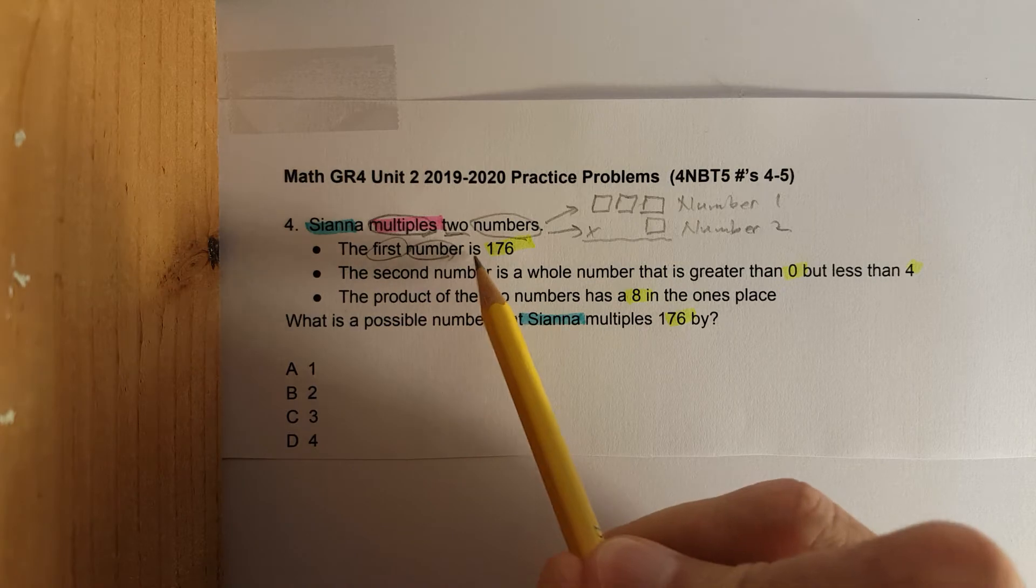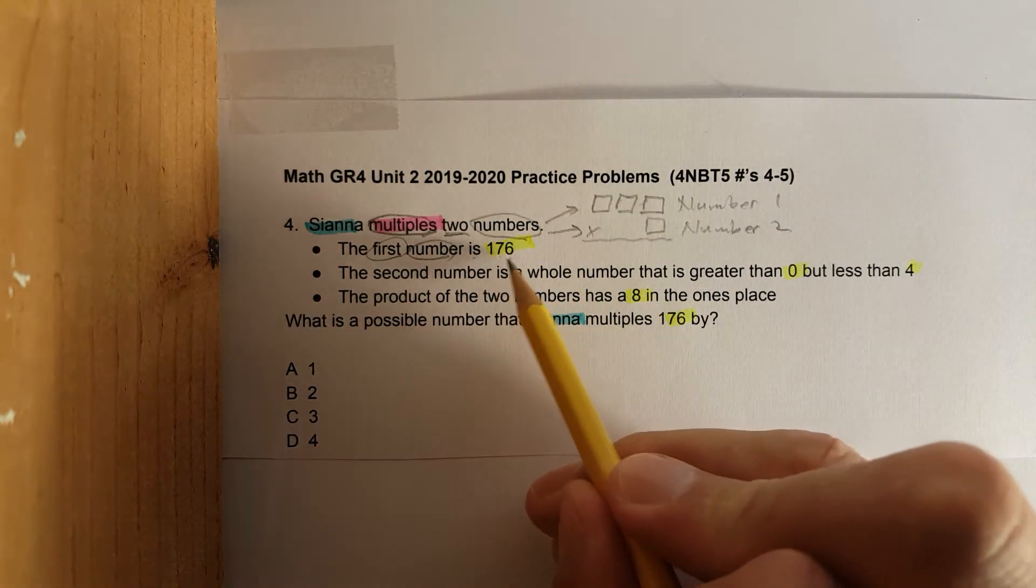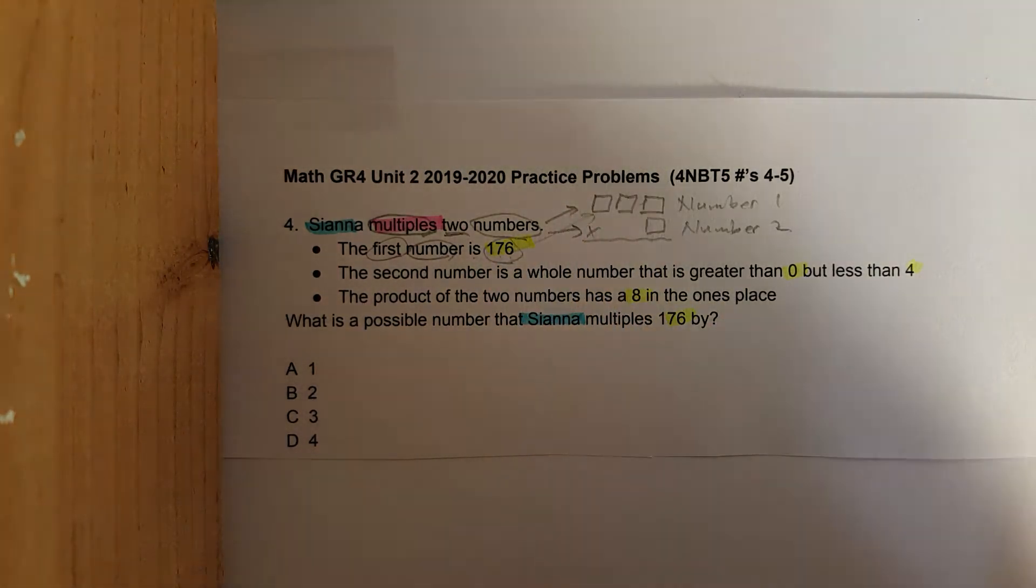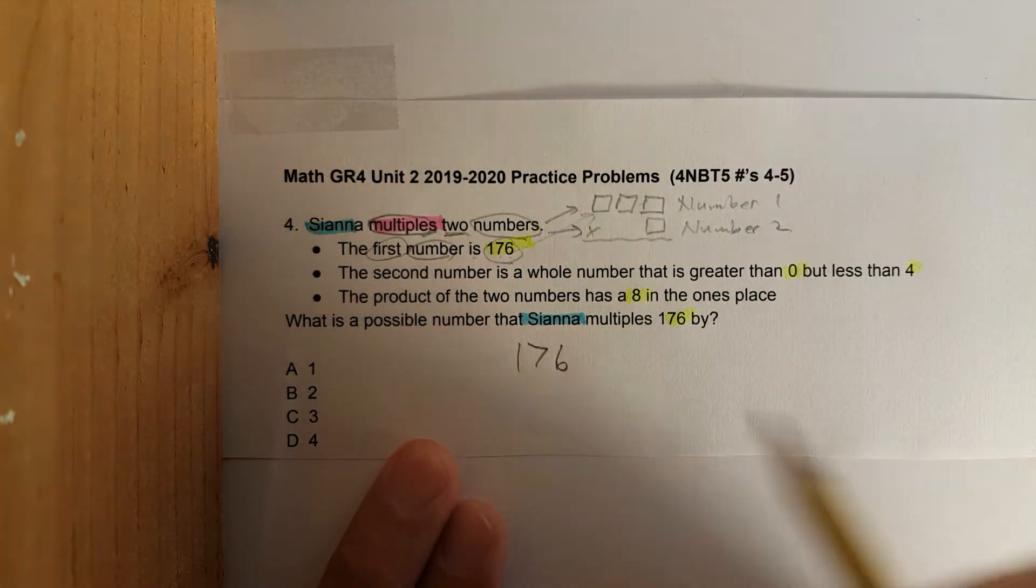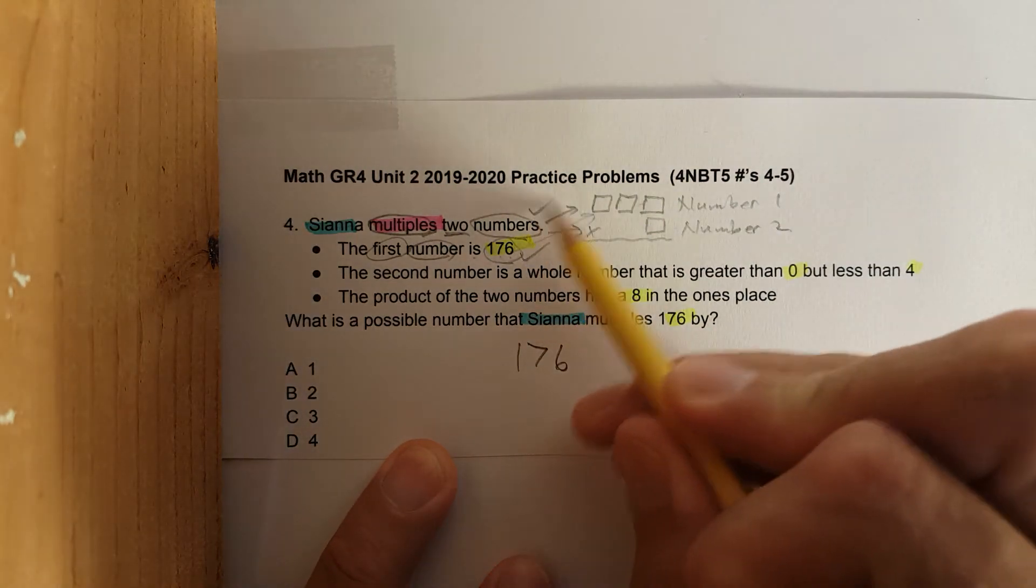The first number is 176. So you'd put 176 right in there. I'm going to write it down here so we can see it nice and clear.